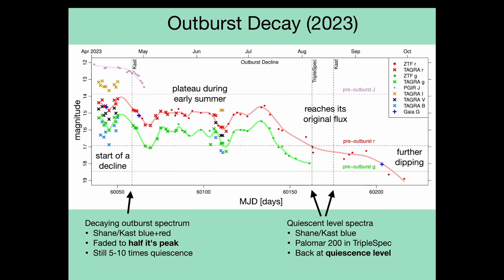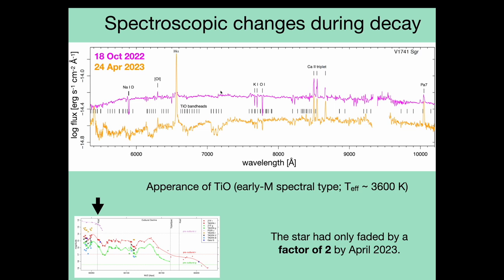Later, we obtained two more spectra: one near-infrared spectrum from Palomar and another CAST spectrum from Lick Observatory. Here's a comparison of the original outburst spectrum in magenta and the CAST spectrum from April in orange, when the outburst was just starting to fade. These spectra have absolute flux calibration, so the vertical shift represents the fading. You might notice this prominent change in features marked by tick marks — this is titanium oxide absorption that has appeared in the April spectrum but wasn't present in the outburst peak spectrum. The titanium oxide absorption indicates a lower temperature of about 3600 Kelvin, or roughly an early M spectral type. This represents a drop in spectroscopic temperature by about 1000 Kelvin from the outburst peak.